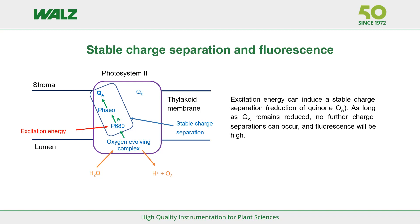With fluorescence measurements, we mainly probe the effects of photosynthesis as sensed by Photosystem II. This is the reaction center at the beginning of the photosynthetic electron transport chain — the reaction center that can split water into oxygen, protons and electrons. One of the central functions of reaction centers is the creation of a stable charge separation. Light energy drives the transfer of an electron from one side of the membrane to the other. If this process can take place in all reaction centers, we say all reaction centers are open, and the fluorescence emission is minimal: F0. If this process cannot take place at all, we say all reaction centers are closed, and the fluorescence emission is maximal: Fm.